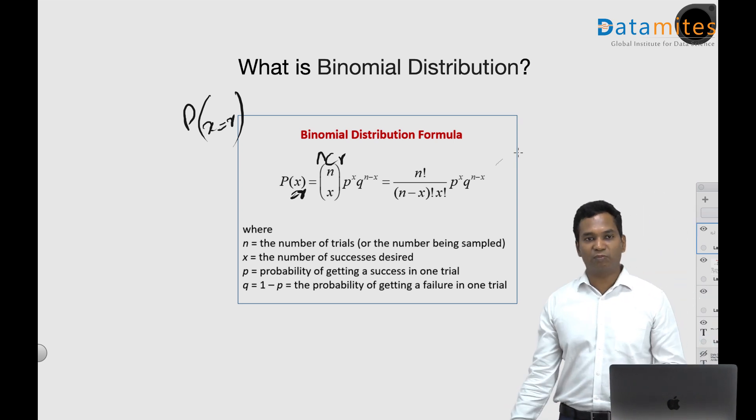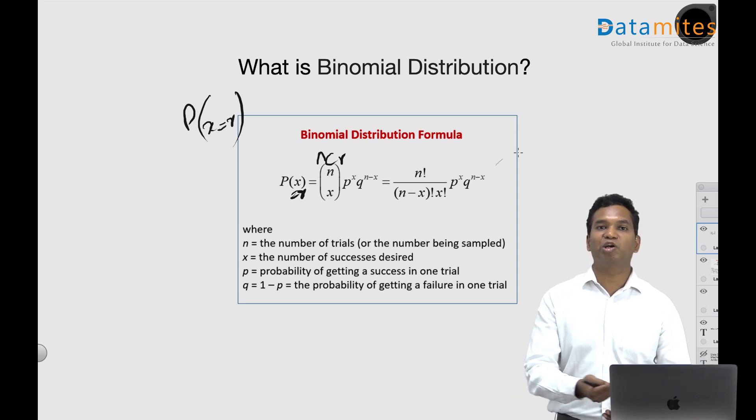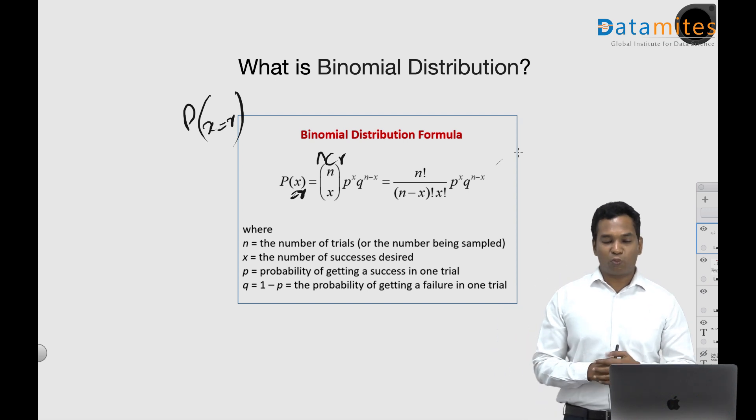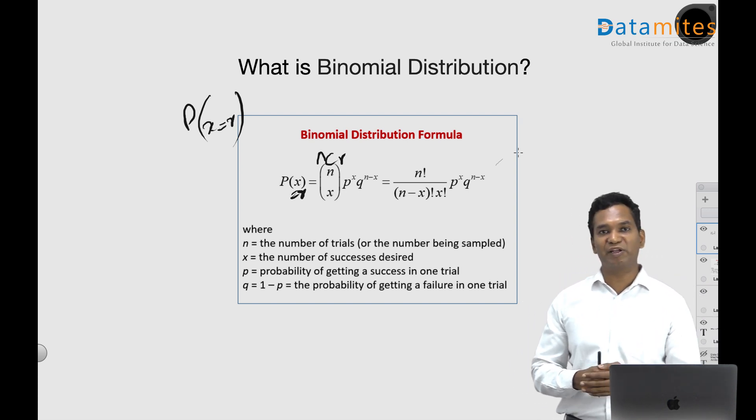I will record another comprehensive video about what binomial distribution is, how it originated, and what are the use cases in a different video. For now, binomial distribution is a distribution for calculating the probabilities of an experiment which has fixed trials, two outcomes, independent events, and the probabilities remain the same across the experiment.